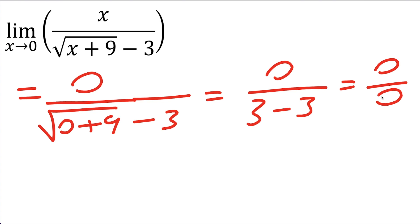Whenever we get dividing by 0 we have to see if there's another method we can do to solve this problem.